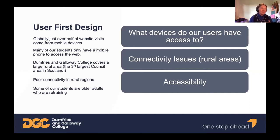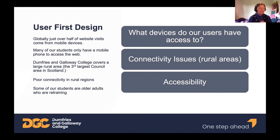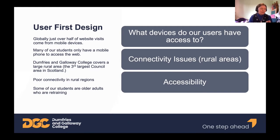Having briefly covered the programming side, I'll talk about how I approach designing features. My degree was in interactive media design, which covered how people interact with technology and was big on thinking about your users first. That's something I feel is very important when planning, coding, or designing anything — and it's also quite true for making interactions accessible. Globally, just over half of website visits now come from mobile devices, and during the pandemic we became very aware that many of our students only have access to a mobile phone, so we needed to make sure the theme was responsive.